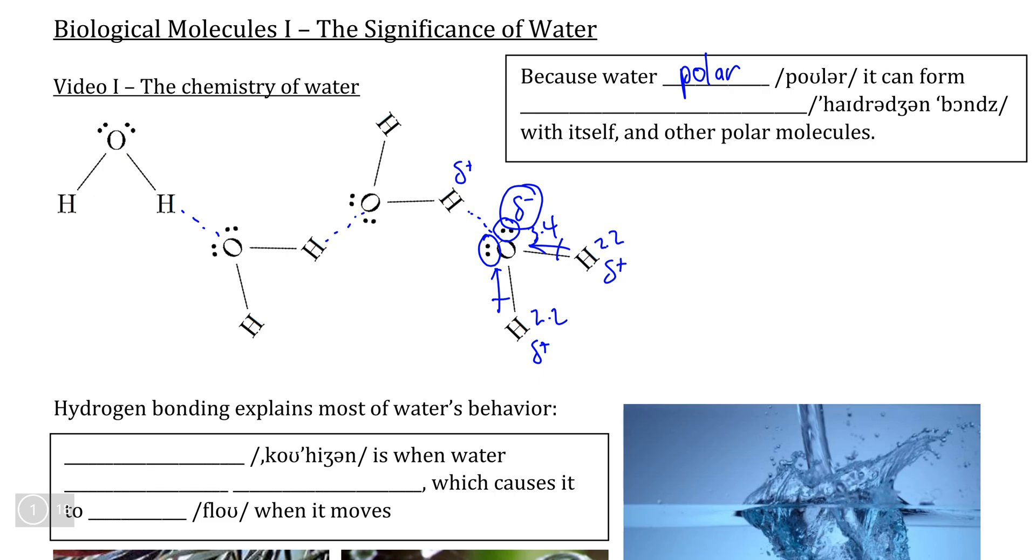And if you remember the different types of intermolecular forces, you will recognize these as hydrogen bonds because we have an attraction between a hydrogen that is bonded to an oxygen, attracting to an oppositely charged oxygen on another water molecule.